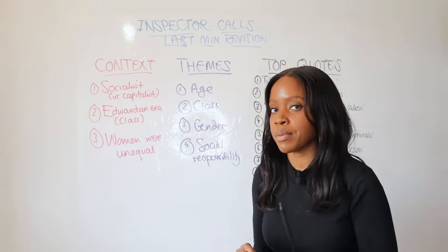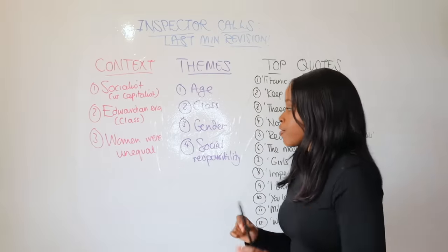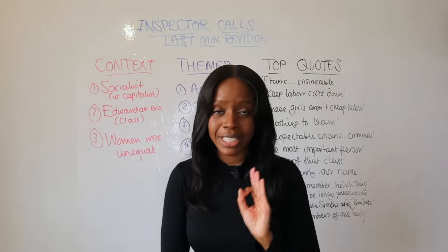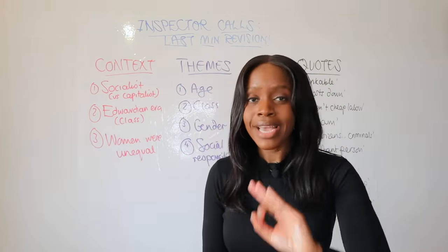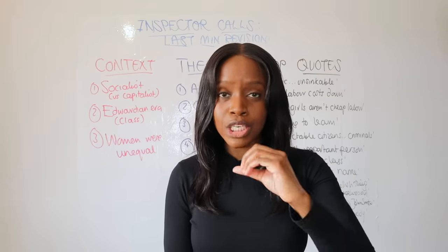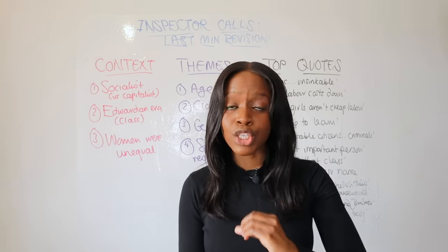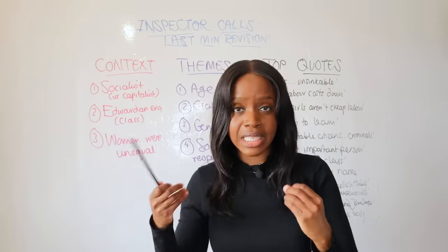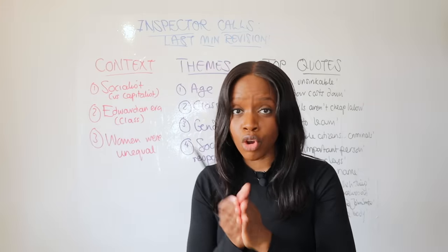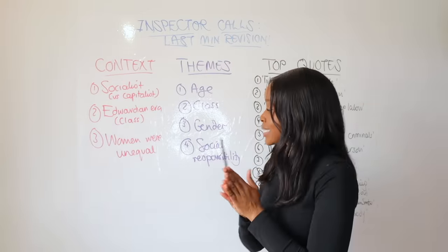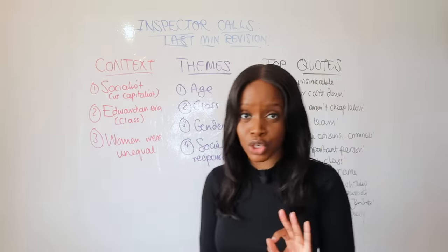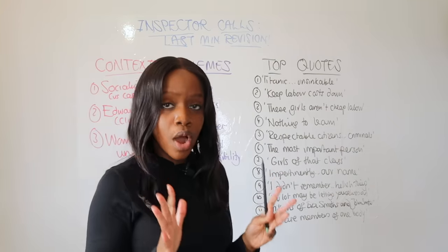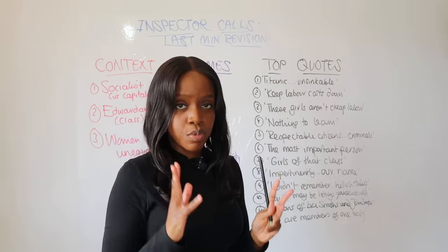The final theme is social responsibility. Priestley's message to rich people is that helping the poor was not a choice — it was a duty. They had a social responsibility to use their resources, money, wealth, and status to help the poor. It is not a choice; it is a duty.